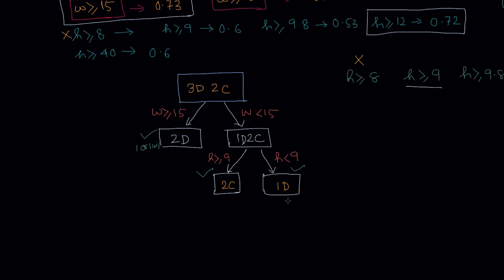Suppose a new record comes in with weight 14 and height 7, and we want to predict the animal. Since weight 14 is less than 15, we go to the left branch. Then we apply the height condition: height 7 is less than 9, so we reach the leaf node that says dog. This is how we make predictions using the decision tree.